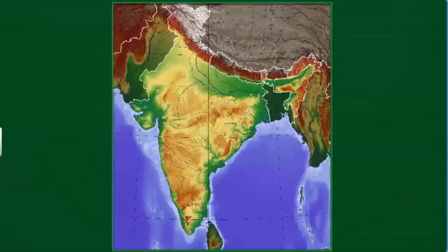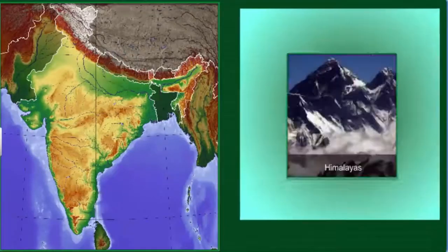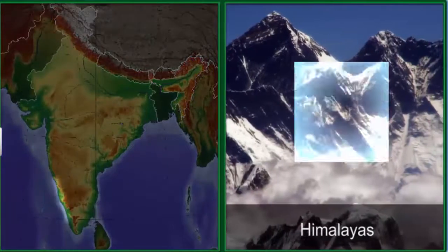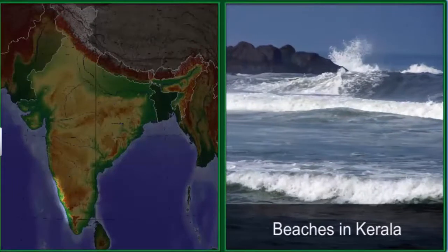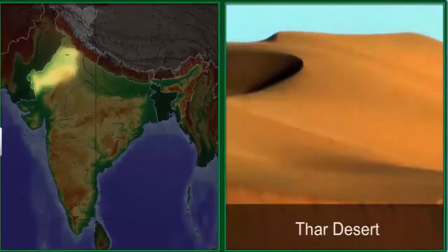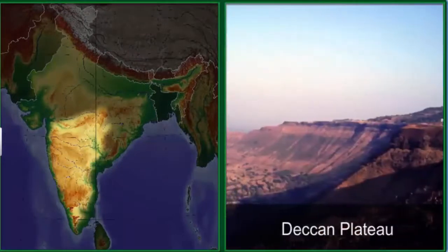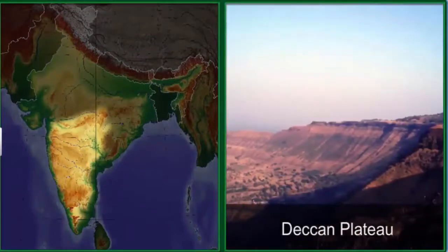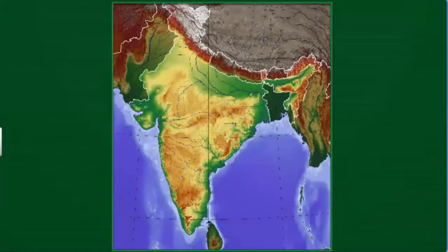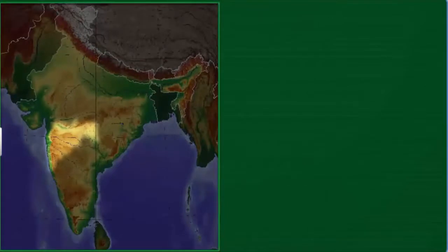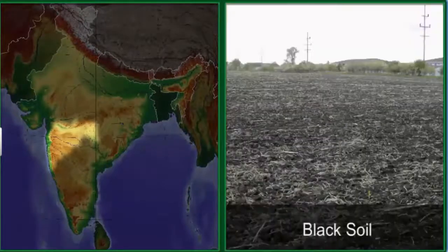India is a land of very diverse physical features. It has the Himalayas, beaches in Kerala, the Thar Desert in Rajasthan, and the Deccan Plateau. Even the color of the soil varies from one region to another.